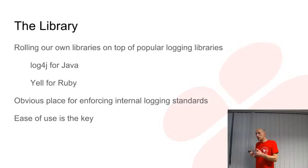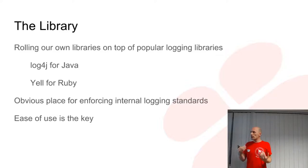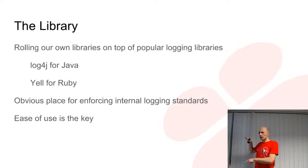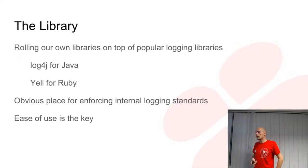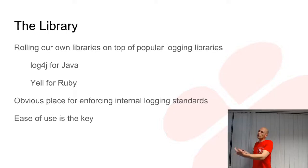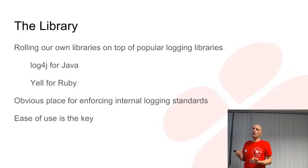Even when your log messages are structured in JSON, you still need a common schema. Otherwise the log messages would be hard to utilize. For that reason, we have fixed our top-level schema of the log messages. Adhering to that schema is ensured by our own logging libraries, written on top of popular logging libraries like Log4J for Java or Yell for Ruby. You really cannot log in such a way that the top-level schema would differ from what we have agreed on.